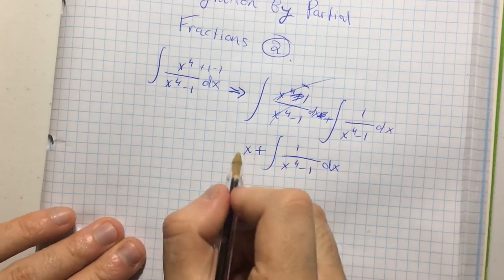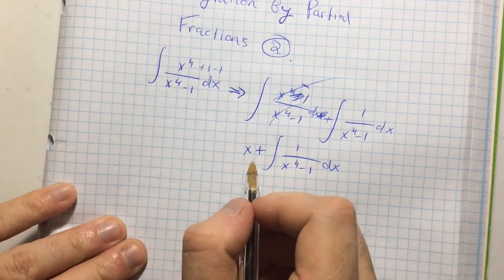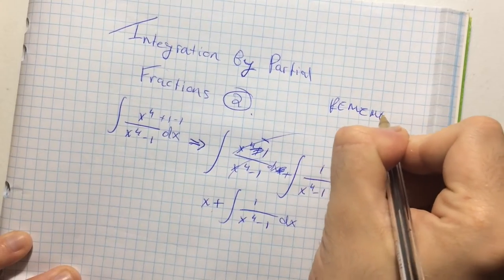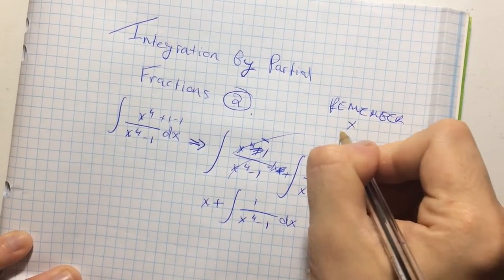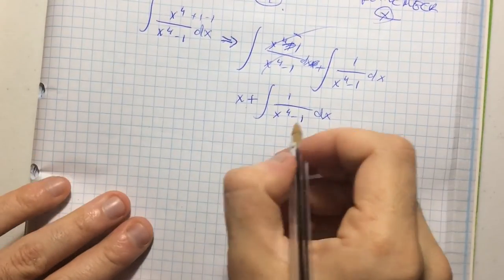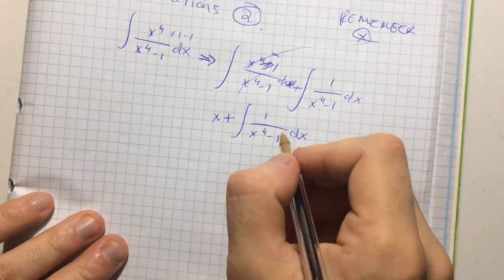What now? Well, let's just forget about x for now. I'm going to write him up here. I'm going to write, remember, x. Cool. I've given myself a mental note. So, let's integrate one over x to the fourth minus one.